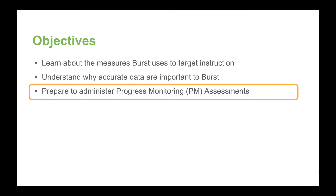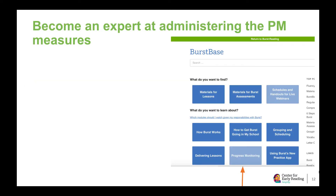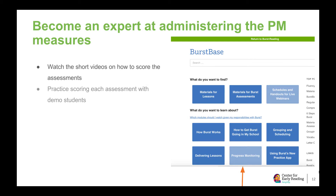Let's walk you through the steps to get ready to administer PM assessments to BIRST students. Now that you have a better understanding of how BIRST interprets data, we'll help you become an expert at administering and scoring the PM assessments. Your first step is to watch the videos for each measure. There are short videos on how to score each of the BIRST measures in the BIRST base under progress monitoring on the training page. Be sure to actually practice scoring the BIRST measures along with the video with the students in your demo class. Phoneme Segmentation Fluency and Nonsense Word Fluency are two of the most difficult assessments to administer, so practice scoring both of these assessments as much as you need to feel confident before assessing BIRST students.